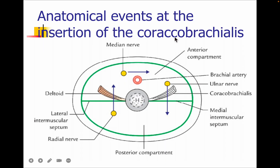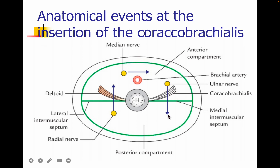Now let's discuss the events occurring near the insertion of the coracobrachialis muscle, in the middle one-third of the humerus. At this level, we have the insertion of the coracobrachialis and the insertion of the deltoid. The ulnar nerve, initially in the anterior compartment, pierces the medial intermuscular septum and enters the posterior compartment. The radial nerve, in the posterior compartment, pierces the lateral intermuscular septum and enters the anterior compartment. The median nerve, which is lateral to the brachial artery, crosses toward the medial aspect. The basilic vein, which is cutaneous, pierces the deep fascia and goes inside.